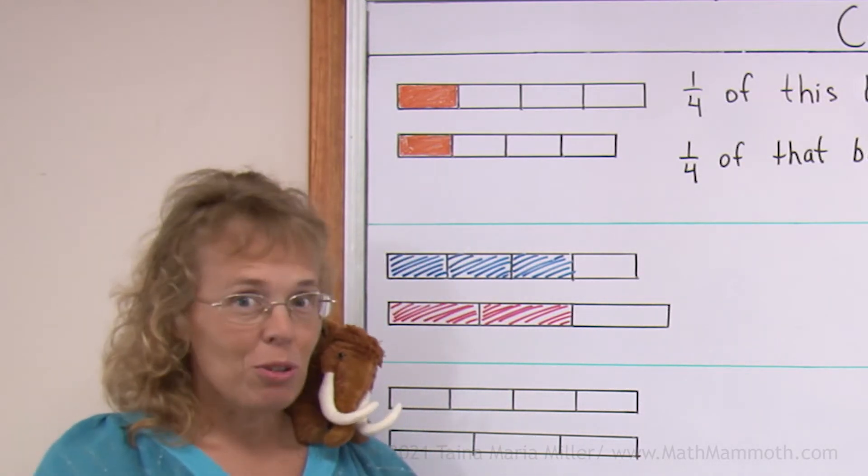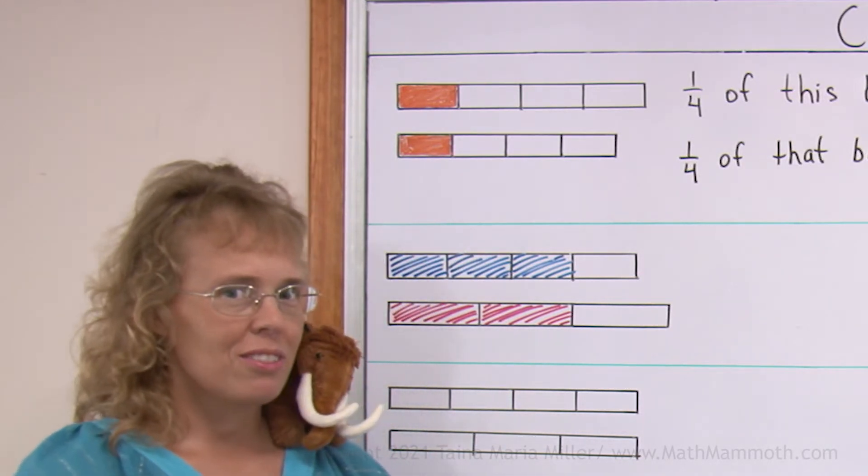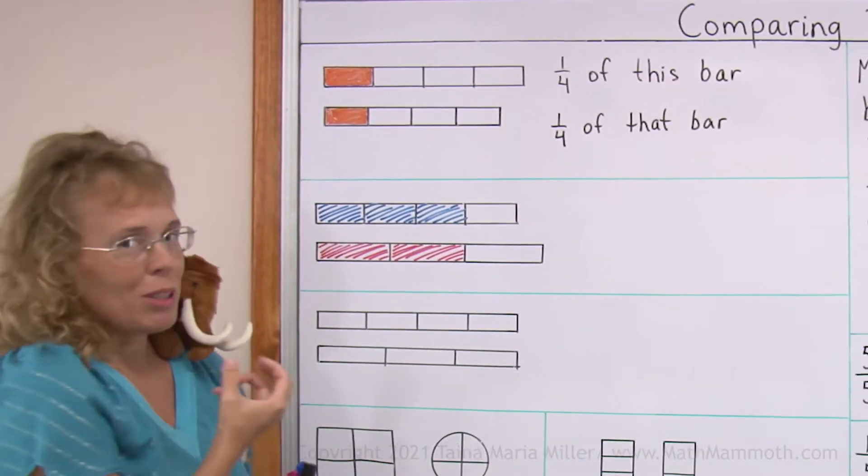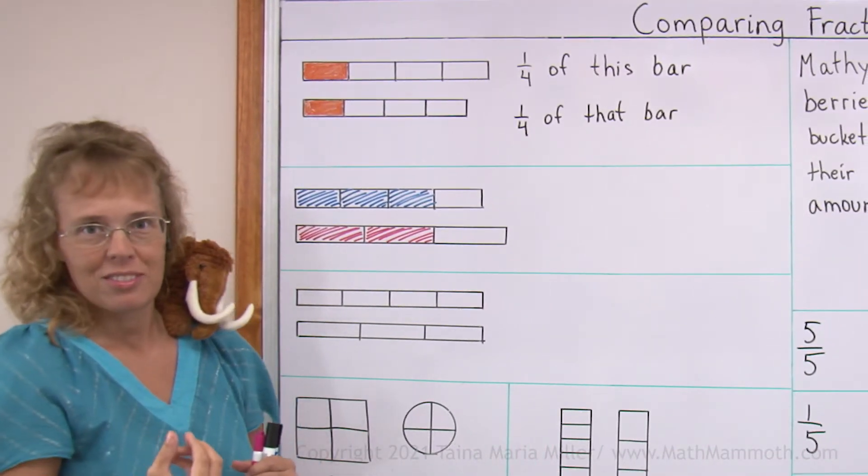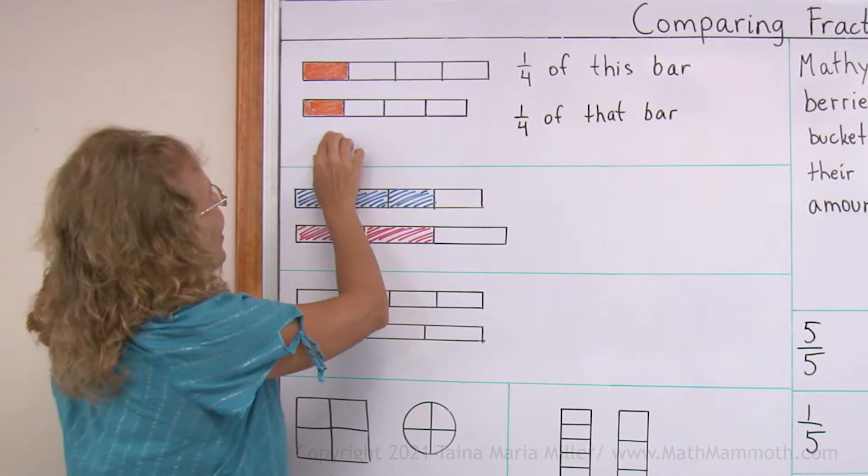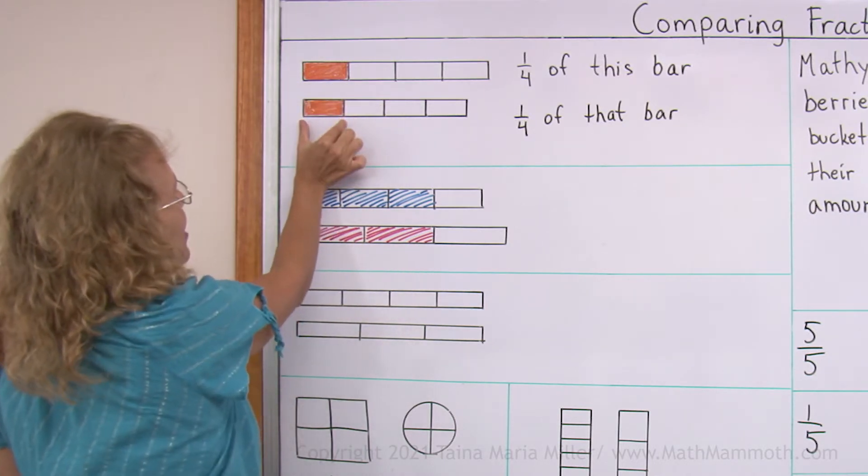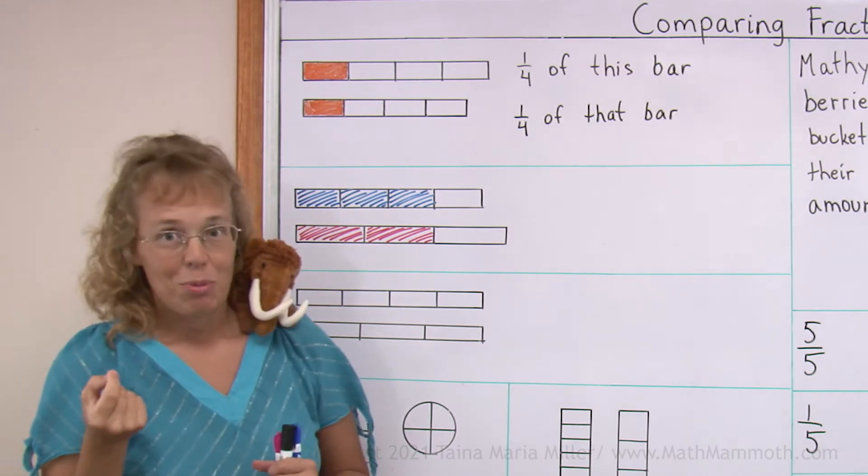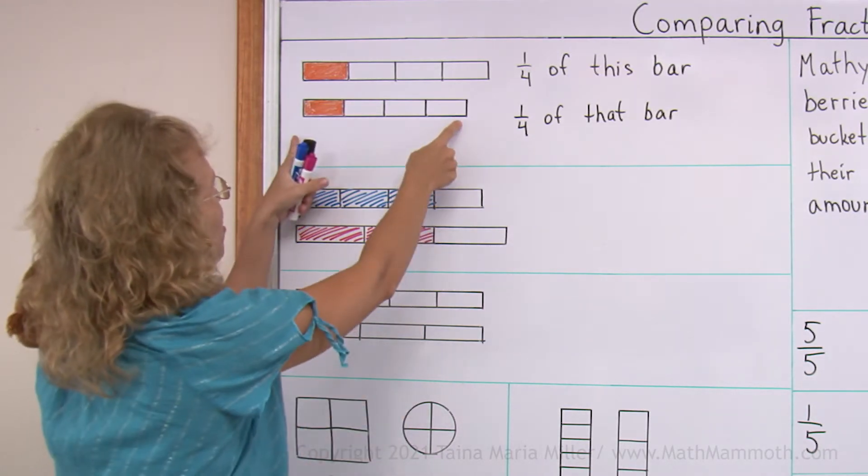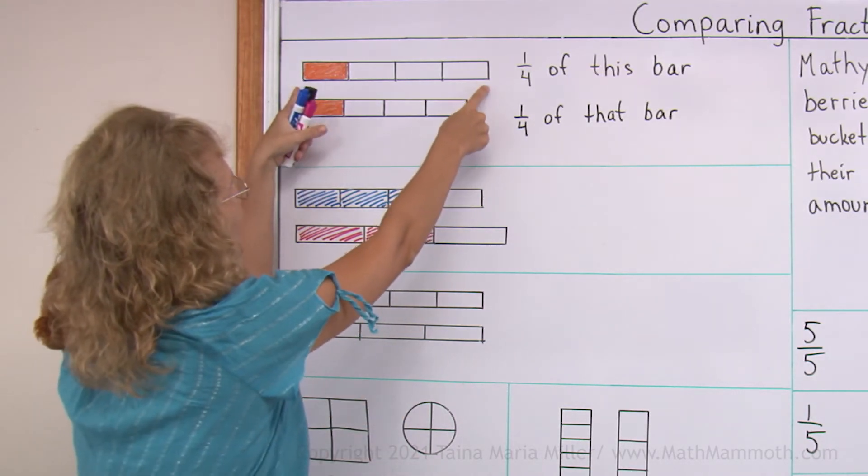So, does that mean that one-fourth is more than one-fourth? Wouldn't one-fourth be equal to one-fourth? As you can see, this fourth is a bigger piece than this. The problem is, our wholes are not the same size, okay?